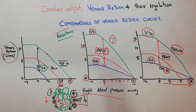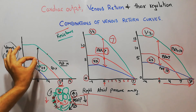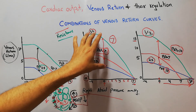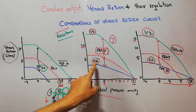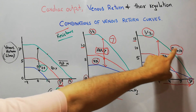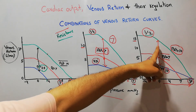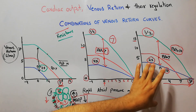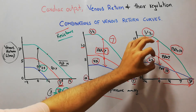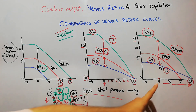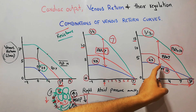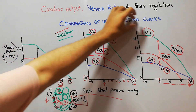In summary: if mean systemic filling pressure increases, venous return increases; if it decreases, venous return decreases. If resistance to venous return is decreased, venous return increases; if resistance is doubled, venous return decreases. If resistance is decreased and mean systemic filling pressure is also increased, then venous return increases many times more than normal. The right atrial pressure has to increase above the normal level of seven to bring venous return down to zero. That's all about the combination of different venous return curves.